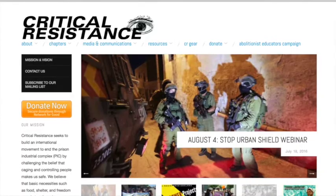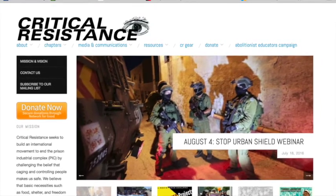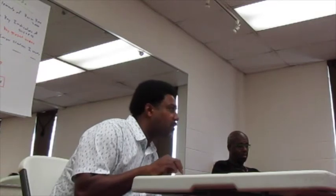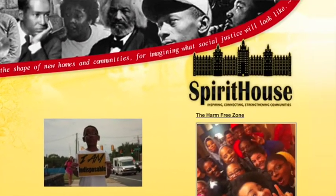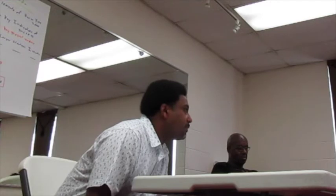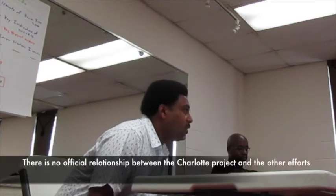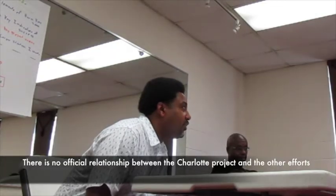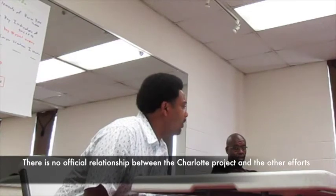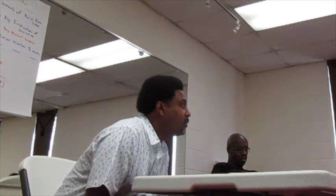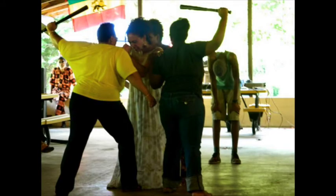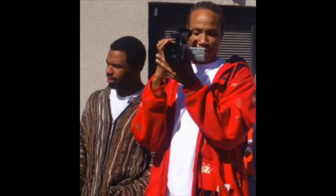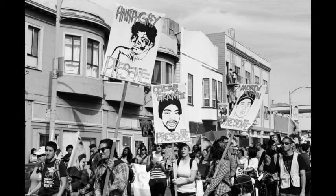The two most successful harm-free zones are Critical Resistance out of New York — the framework being used here — and a local project in Durham at Spirit House. Both have had pretty good success and are still in the building stage. Critical Resistance has been doing harm-free zones for around 15 years; Spirit House is in about their eighth year. Spirit House is led by an art collective — framed around ending the prison industrial complex but grounded in neighborhood art. Critical Resistance follows more of a community activism model.